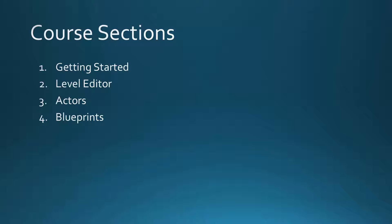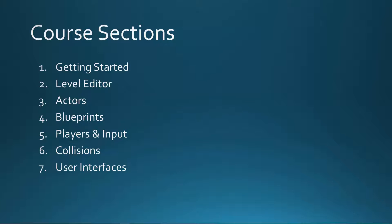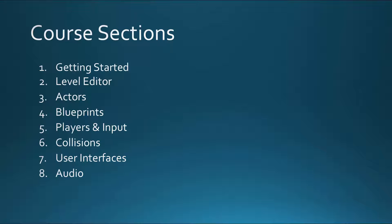The fourth section, Blueprints, will cover Unreal's blueprint system, which is a way to script logic for your game without having to know code. In essence, Blueprints are a way for you to tell the engine how your game should function and what its rules are. The fifth section will cover how to create playable characters for your game and how to set up input for them. The sixth section will cover collisions, including taking damage from enemies when colliding with them and damaging enemies that you fire a projectile at. The seventh section will cover user interfaces and show you how to create menus and HUDs for your game. The eighth section will cover audio, showing you how to add music and sound effects to your game. And then the final section will cover any additional topics that don't fit into one of the previous categories.